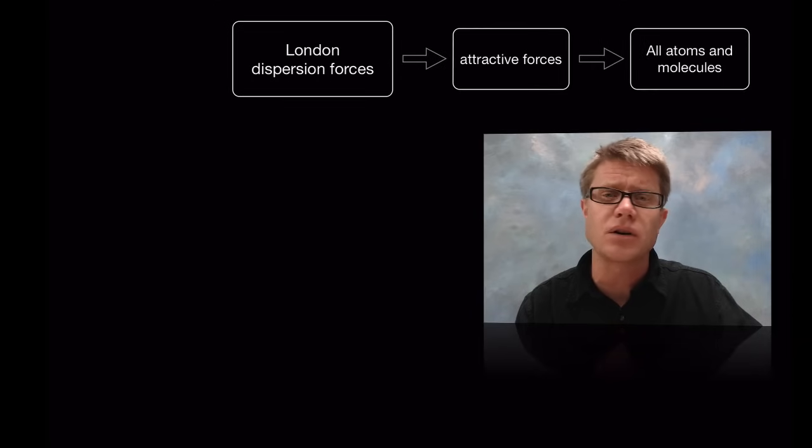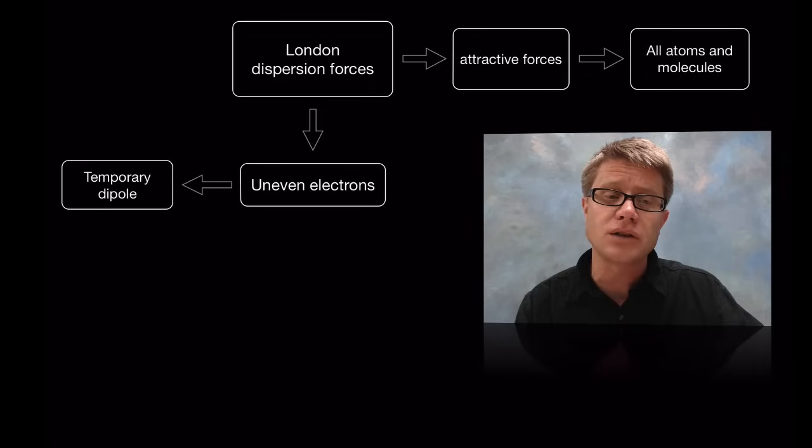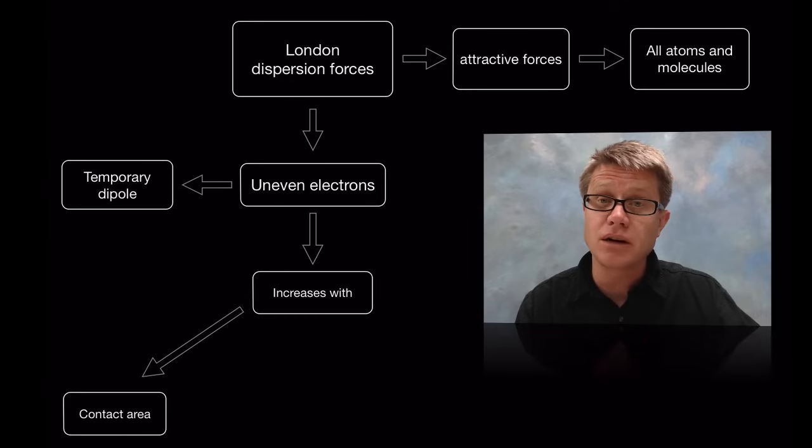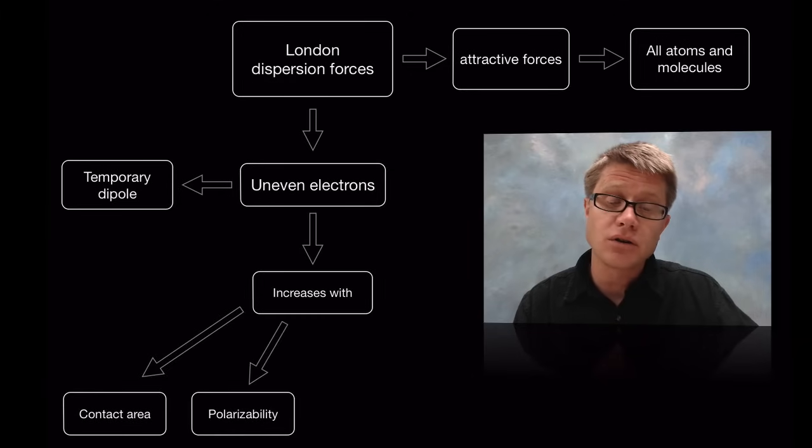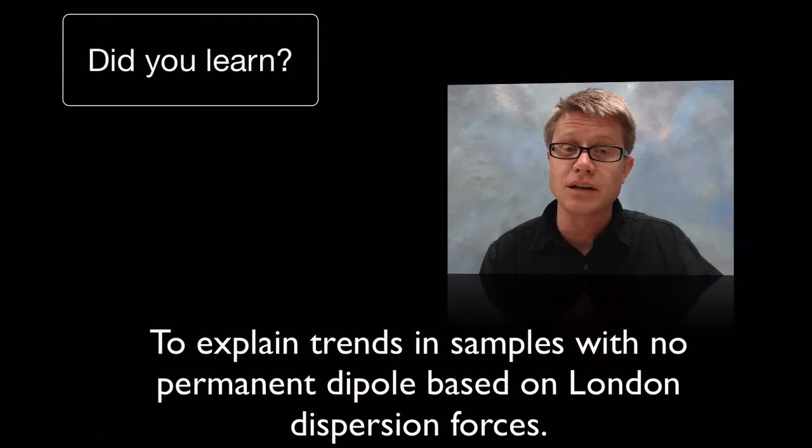So again, what are they? They're attractive in nature. Found in everything. It's uneven electrons create these temporary dipoles. Remember what increases it, our list would be contact area or surface contact. Also the polarizability, which is going to be based on the molecule size. And pi bonding.